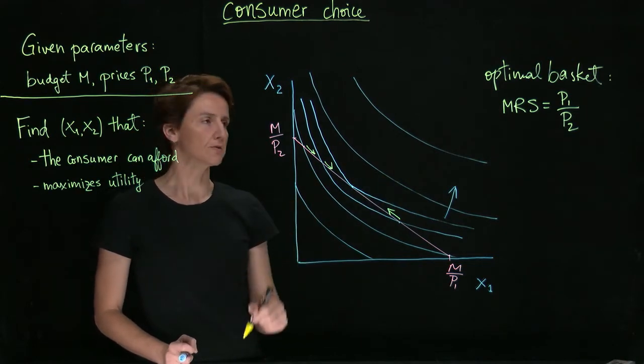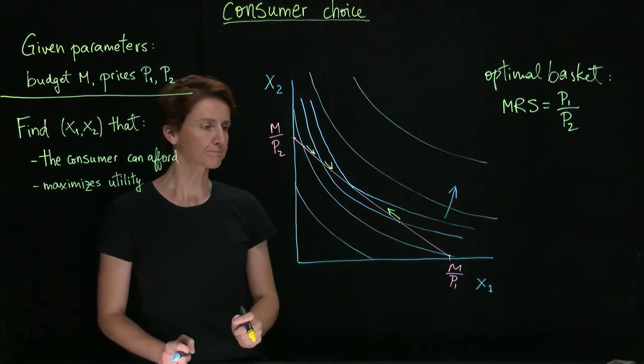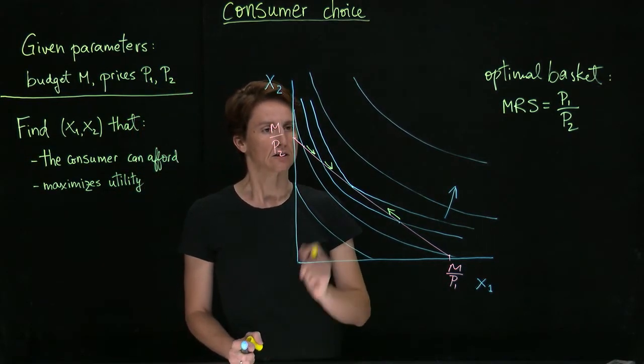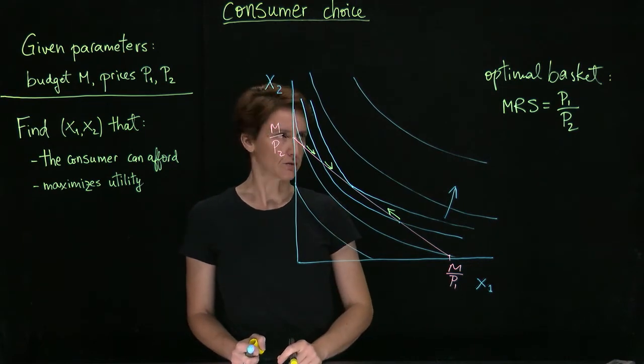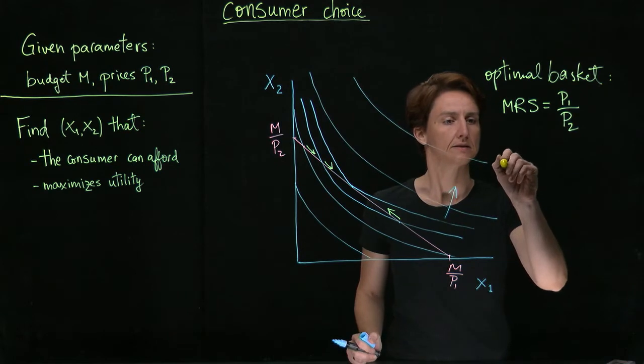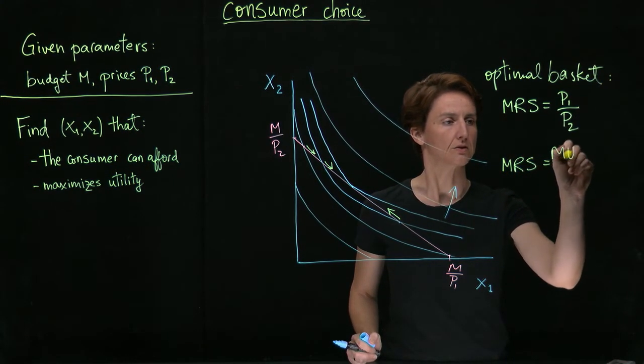The other condition, if we were to solve for that point mathematically, would be that we're on the budget constraint. For example, recall that MRS is equal to the ratio of marginal utilities.